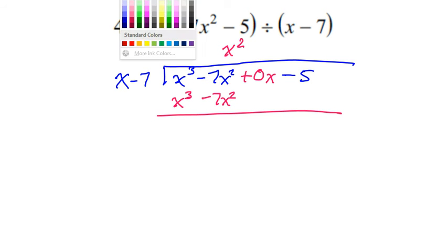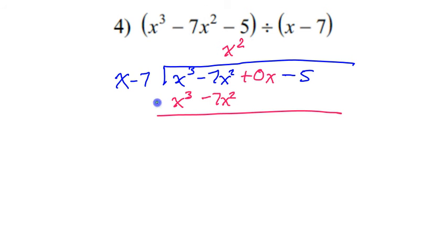Now I'm going to change the signs. So this will become negative and this will become positive. Now when I combine like terms, both of these cancel out. That's just a 0. So it's going to come all the way down to just simply a negative 5 right now. That's all I have left.